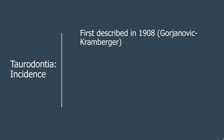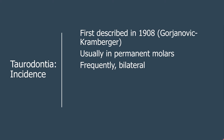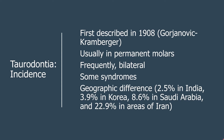Pterodontia was first described about 100 years ago in 1908. Most pterodontia is seen in the permanent molars, and frequently you will see pterodontia on both sides. There are several syndromes where a patient may have pterodontia. Different studies have shown geographic differences in prevalence — about 2.5% in India, while some areas in Iran have as high as 23%.